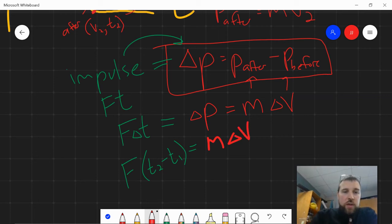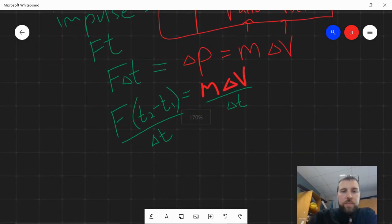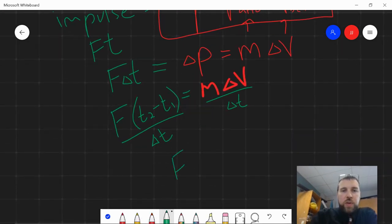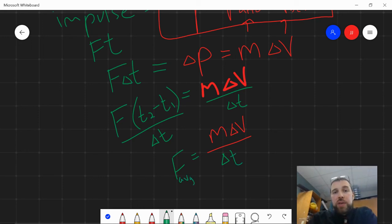So, now we divide by that delta T, divide by delta T, and we get, let's scoop this up, that force equal to the mass times the change in velocity divided by the change in time. And that's going to give us whatever that force is on average.